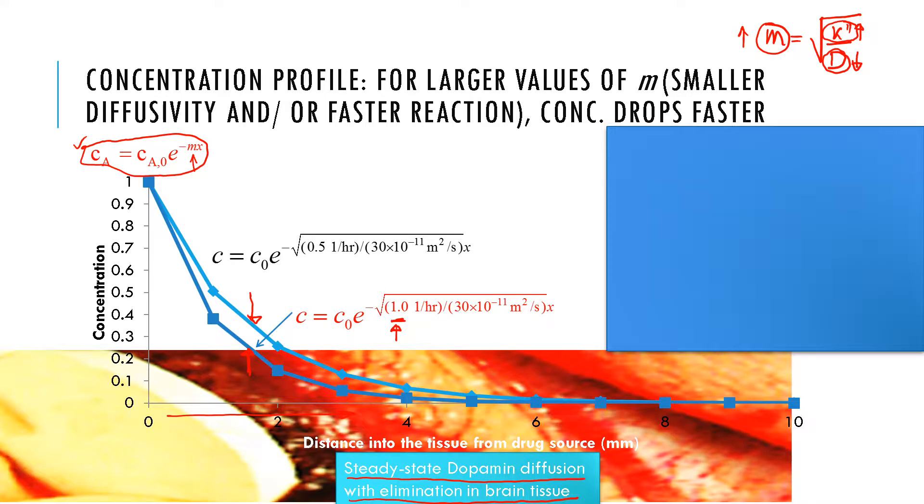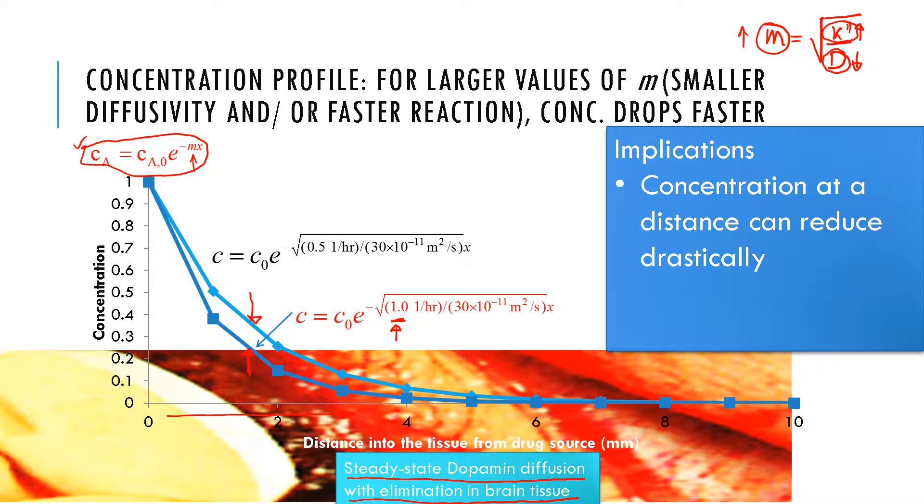The other implication is the flux will increase. Why? Because everywhere the concentration is lower, so if it is lower at the surface then the flux is going to be higher because the slope is higher. In the case of larger M, you'll have a higher rate of drug delivery going into the tissue in comparison to when the M value is smaller.